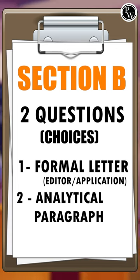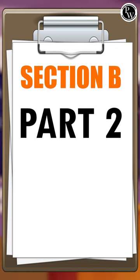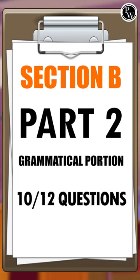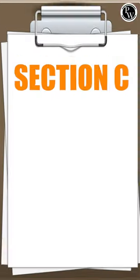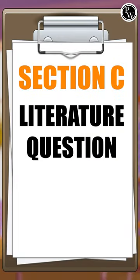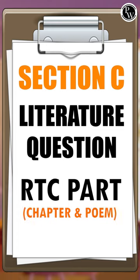In the grammatical portion, you'll be given 12 questions out of which you have to answer 10. In Section C — part three of the paper — you'll have literature questions for the RTC part from the chapters and the poems.